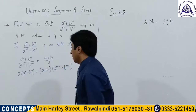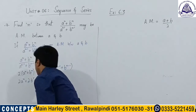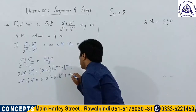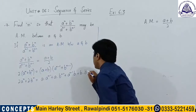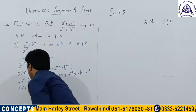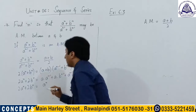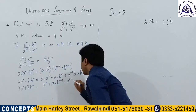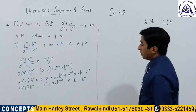Cross-multiplying: 2(aⁿ + bⁿ) = (a + b)(aⁿ⁻¹ + bⁿ⁻¹). Expanding the right side: 2aⁿ + 2bⁿ = a·aⁿ⁻¹ + a·bⁿ⁻¹ + aⁿ⁻¹·b + b·bⁿ⁻¹ = aⁿ + a·bⁿ⁻¹ + aⁿ⁻¹·b + bⁿ. Now shifting aⁿ and bⁿ to the left-hand side.